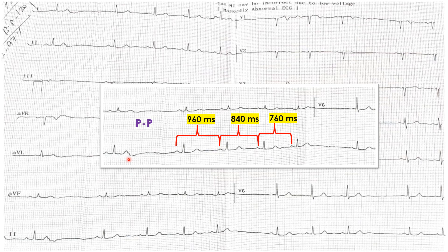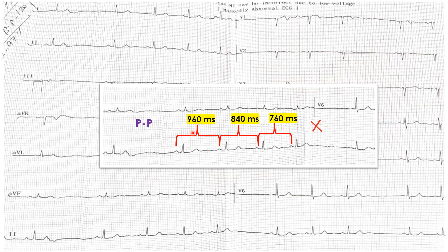The problem can be either due to automaticity or due to impulse conduction down to the atria. Whenever you see a sinus pause, always try to look for problems of impulse conduction. These are called sinoatrial exit blocks. Now, looking at the zoomed-in rhythm strip with marked intervals, the PP interval is getting shorter: 960ms, then 840ms, then 760ms, and then there is no P wave until one fires here.